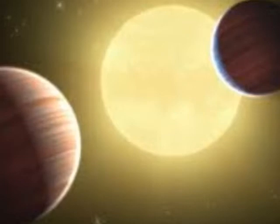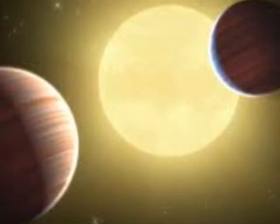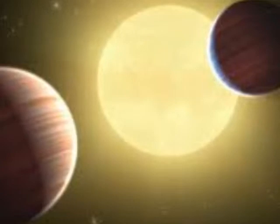If the discovery is confirmed, it would bolster a theory that Earth once shared its orbit with a Mars-sized body that later crashed into it, resulting in the Moon's formation. The two planets are part of a four-planet system dubbed KOI 730.